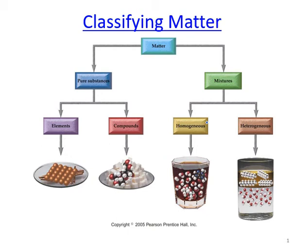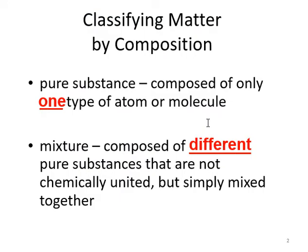Let me talk about the difference between pure substances and mixtures. When we say pure substance, we are talking about only one type of atoms and molecules. But when we talk about mixture, we talk about different types of pure substances. This is the definition we may find in our textbook.